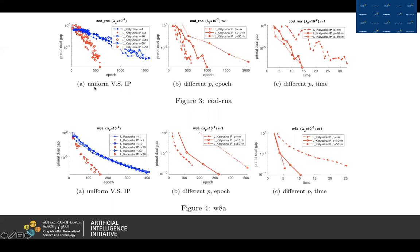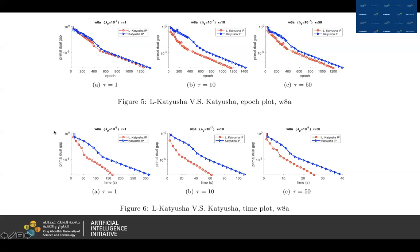This is a comparison of uniform and importance sampling. We also tested the influence of the updating probability.